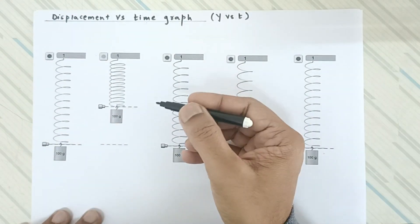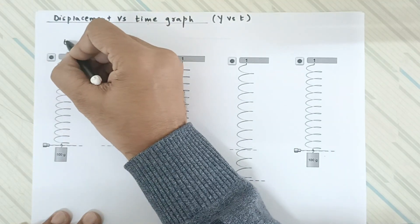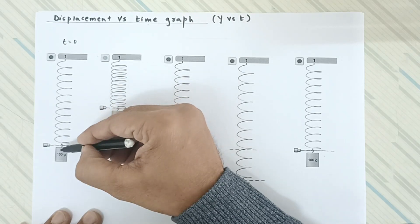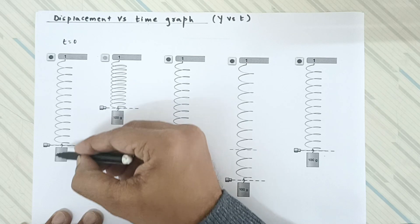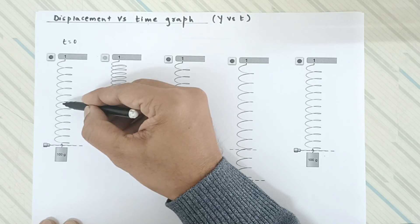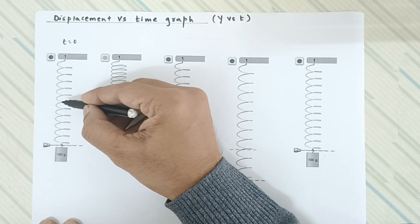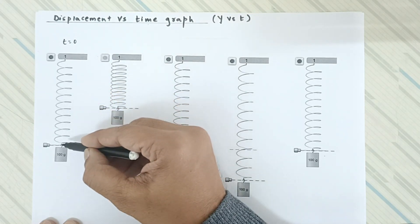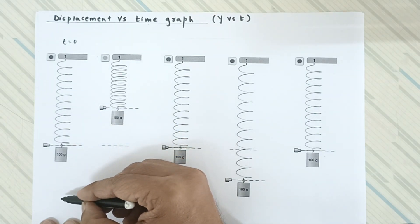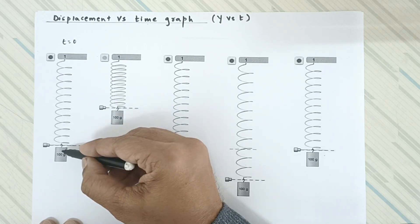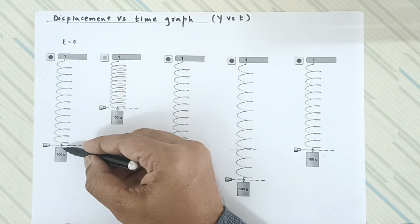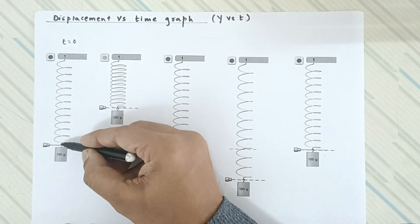At time t = 0 the spring-mass system is at the mean position. It then goes up to the extreme position, comes back down, goes to the lower extreme, and returns to the mean position. At the extreme position it has maximum displacement upwards — that is the one-quarter oscillation. Then it completes half oscillation back to mean position, three-quarter oscillation to the lower extreme, and finally one complete oscillation back to mean position.